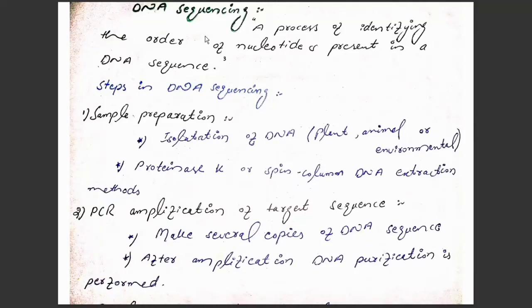Assalamualaikum friends. Today we will talk about DNA sequencing. DNA sequencing is a process of identifying the order of the nucleotides present in a DNA sequence. In this process, we find out the exact order of the four nucleotides that are present in the DNA sequence.